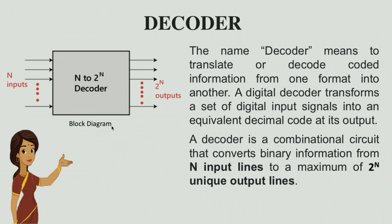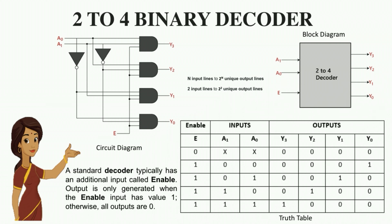This is the block diagram of a decoder. It is an n-to-2^n decoder, so there are n inputs and 2^n outputs. The name decoder means to translate or decode coded information from one format to another. A digital decoder transforms a set of digital inputs to an equivalent decimal code at its output. The decoder is a combinational circuit that converts binary information from n input lines to a maximum of 2^n unique output lines.